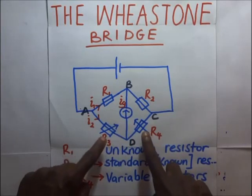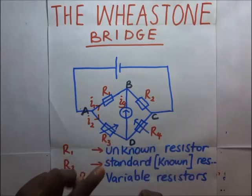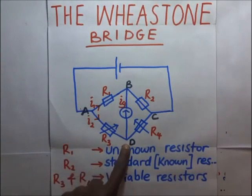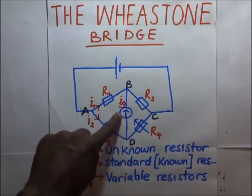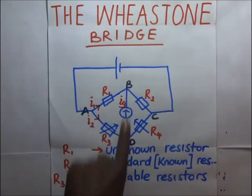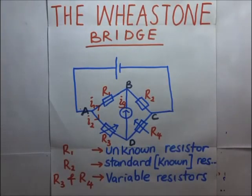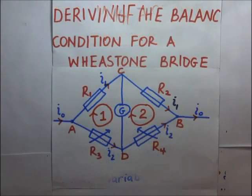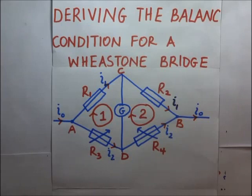If we vary these resistances such that the potential at B and the potential at D are the same, the galvanometer will not deflect, meaning no current flows through it. This condition — no current through the galvanometer — is what we call the balance condition. We will derive the balance condition in two ways: using Kirchhoff's laws, or using the physical conditions that must exist for balance.